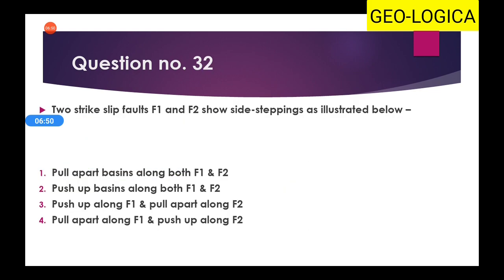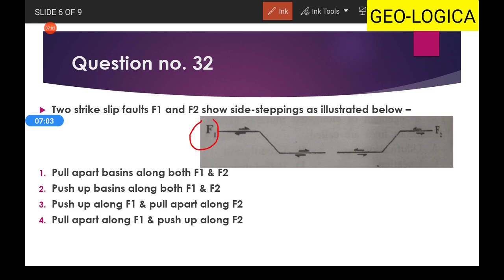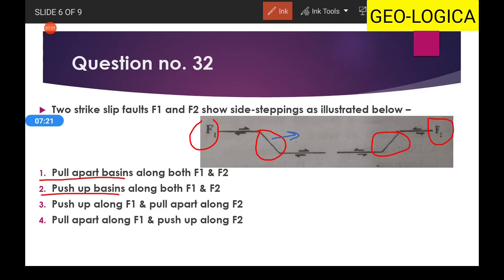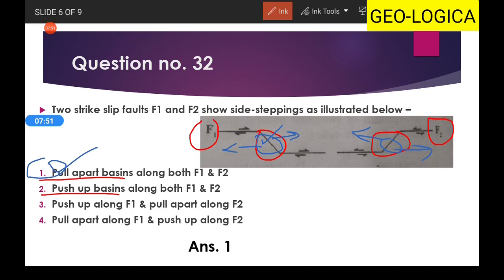The second option is the right answer for Q31. Question 32 involves two strike-slip faults F1 and F2 showing side-stepping. For fault F1, one block moves in one direction and the other in the opposite direction — they are pulling apart, forming a pull-apart basin. The same condition applies to F2, so both F1 and F2 are pull-apart basins, making option one the right answer.